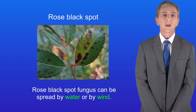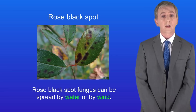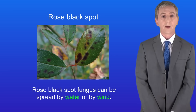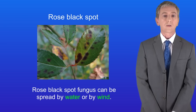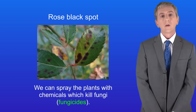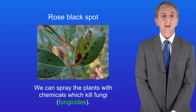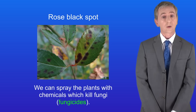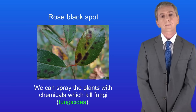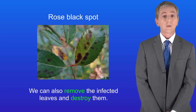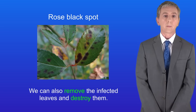Rose black spot is caused by a fungus and this can be spread by water or by wind. There are two ways to treat rose black spot. Firstly we can spray the plants with chemicals which kill fungi - these are called fungicides. The other way is to remove the infected leaves and then destroy them.